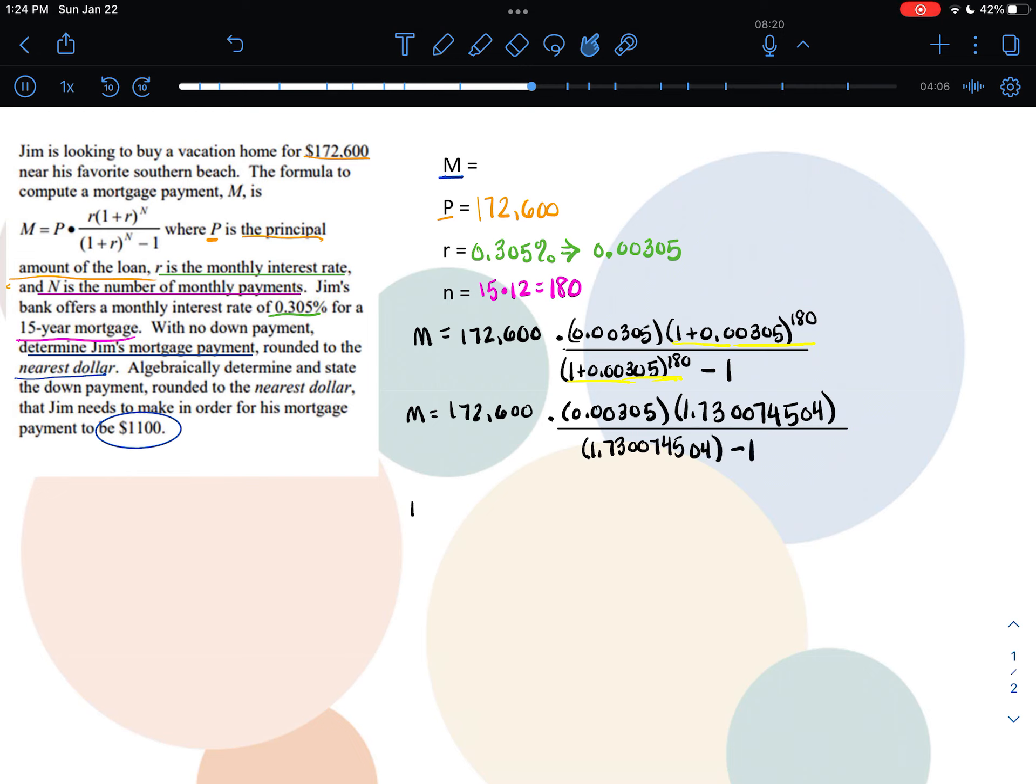Subtracting one on the bottom, I get 172,600 times 0.00305 times 1.7300745, and then on the bottom, that becomes 0.7300745.